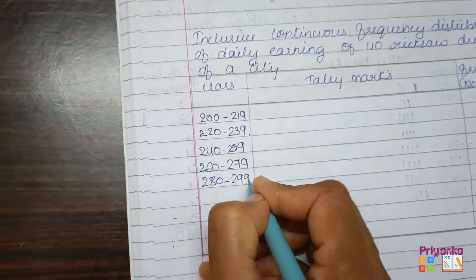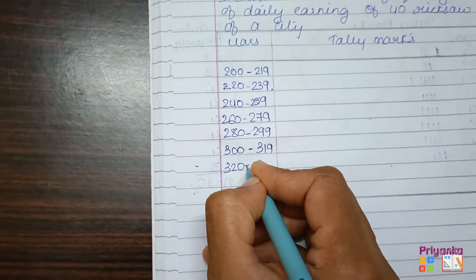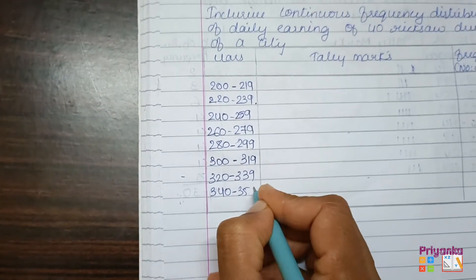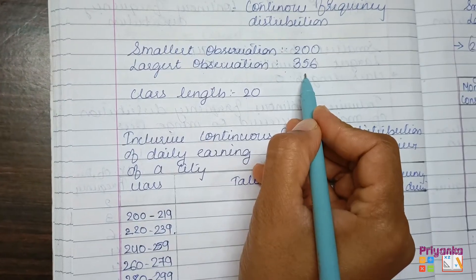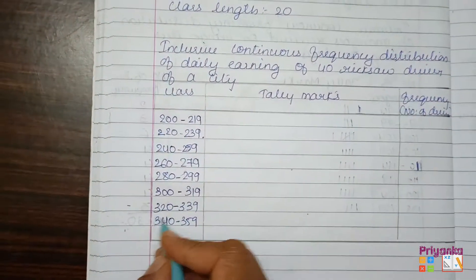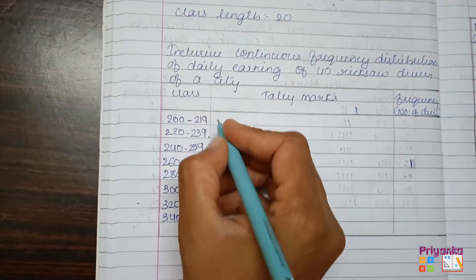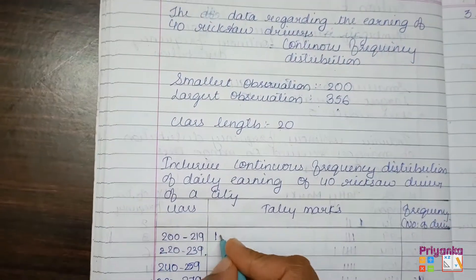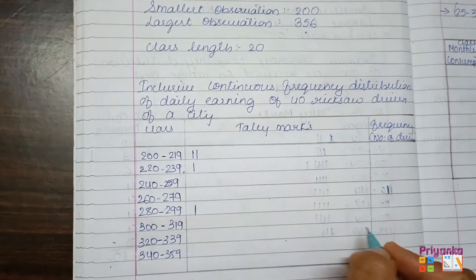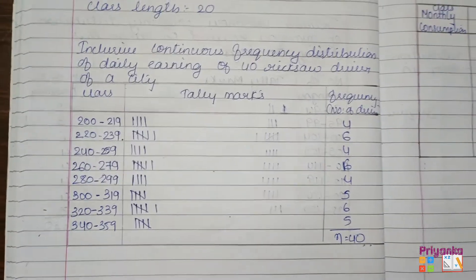The largest observation ends at 356, which is covered in the 340–359 class. Tally marking: 285 goes in one class, 215 and 225 in theirs respectively. After completing the tally marking, total frequency n equals 40.